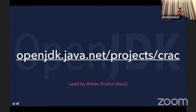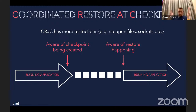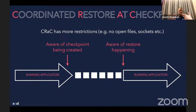CRaC has more restrictions than CRIU: there shouldn't be open files, open sockets, database connections, or any connections at checkpoint time. To give the JVM and your application a chance to react, CRaC provides methods that get called before checkpointing. When CRaC signals a checkpoint, it calls a method and you can close all your resources in that method. When the application is restored, another method is called so you can reopen connections, database connections, and whatever resources you use.